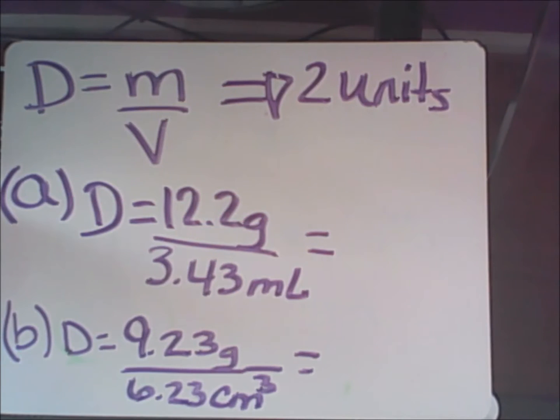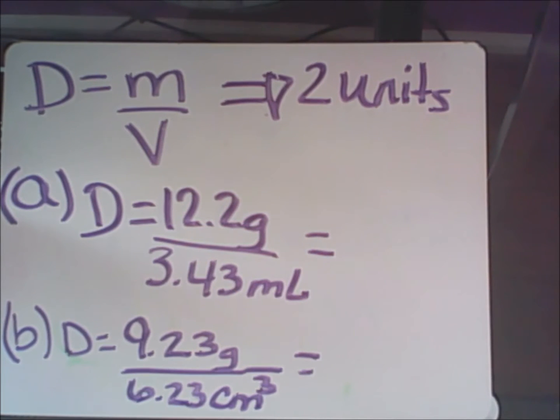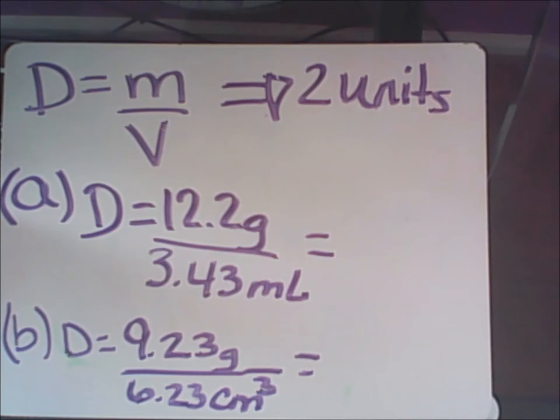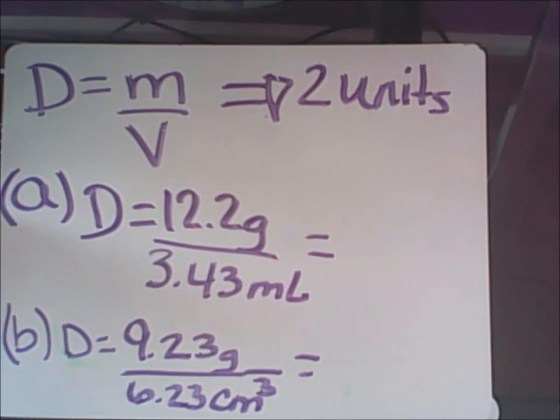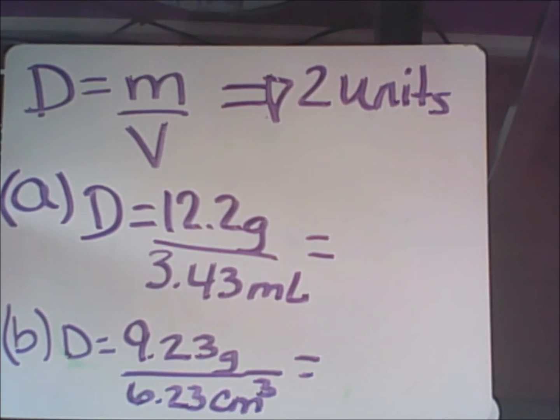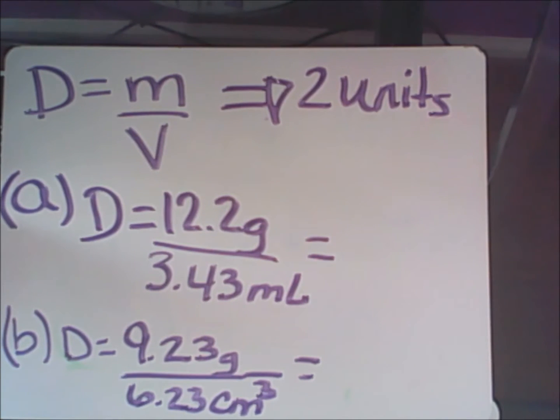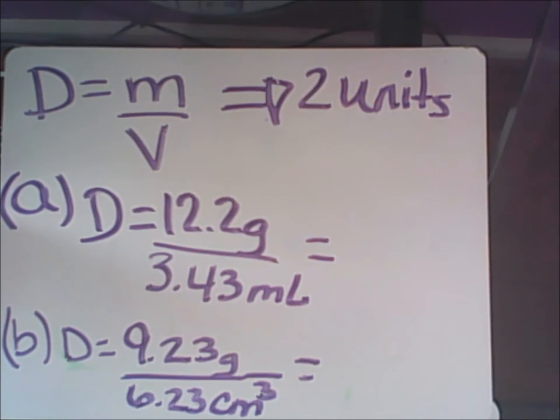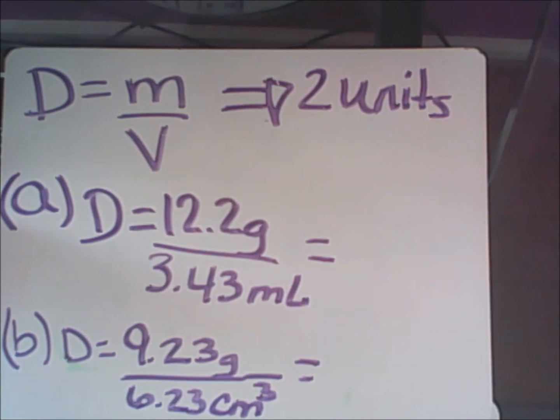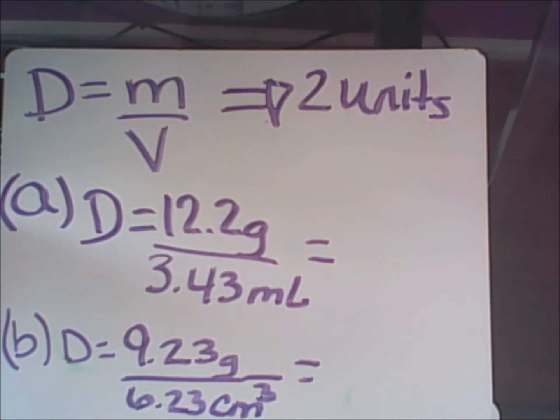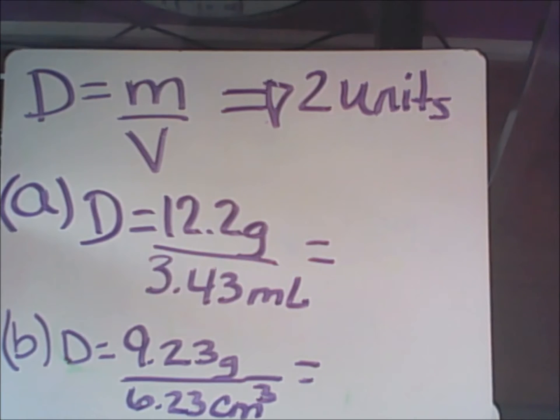Density has two units. D equals mass over volume. As we look at the first example on our worksheet, we find that the mass is provided along with the volume. The units do not cancel out, therefore they are incorporated in our final answer. We also need to consider that our final answer should consist of the proper significant figures or digits.